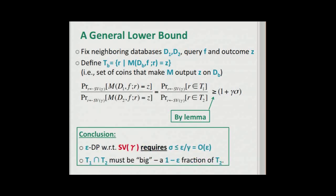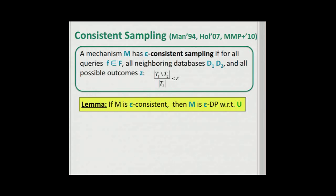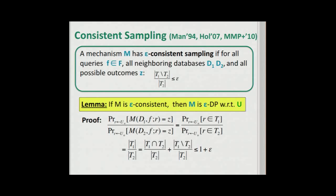More generally, epsilon-DP with respect to Santha-Vazirani distributions requires sigma to be order epsilon, meaning the intersection of T1 and T2 must be very large — at least a (1 - epsilon) fraction of |T2|. This motivates the definition of epsilon consistent sampling: a mechanism has epsilon consistent sampling if for all neighboring databases, this disjointness measure sigma is less than epsilon. It's easy to show that if M is epsilon-consistent, then M is also epsilon differentially private with respect to the uniform distribution.